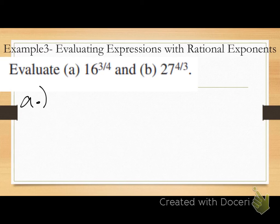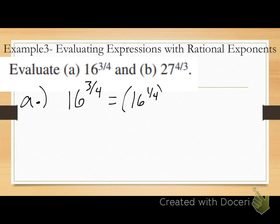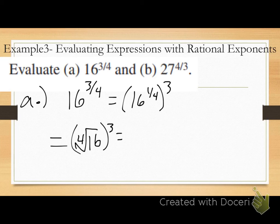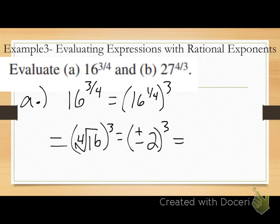Going back, the index of the fourth root of 16 is even and the a value is greater than zero, so there are two real nth roots: positive 2 and negative 2. Positive 2 to the third power is positive 8, and negative 2 to the third power is negative 8. So the full answer is plus or minus 8. Don't forget about that chart.